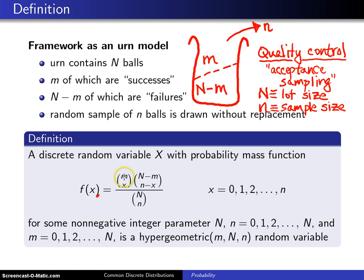One last thing, if you look at these two numbers in the top of the combinations in the numerator, if you add the two top numbers, you get capital N. If you add the two bottom numbers in the combinations in the numerator, you get little n. And the support goes from 0, 1, 2, all the way up to lowercase n.